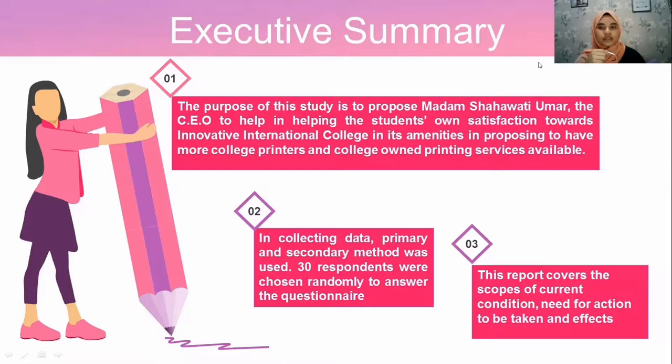We collected data using primary and secondary methods, with 30 respondents chosen randomly among IIC students. This report basically covers three scopes: the first is current condition, the second is our need for action to be taken, and the last one is the effect.